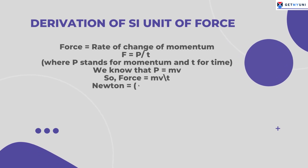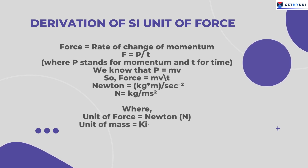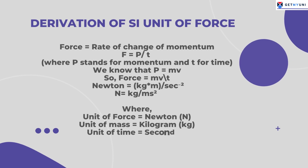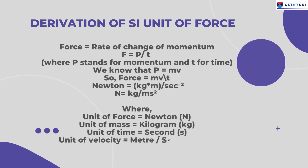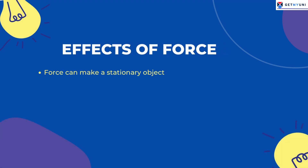Therefore, 1 Newton equals kg·m/s². The unit of force is Newton, the unit of mass is kilogram, the unit of time is second, and the unit of velocity is meter per second.